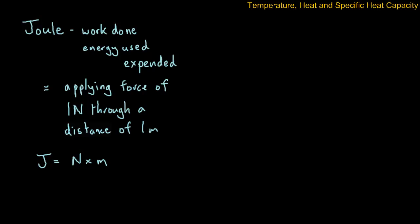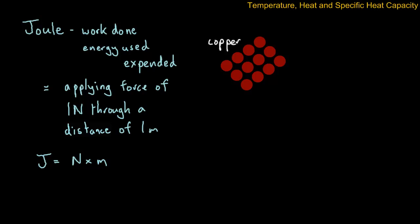Sometimes you'll see the formula written as: joules equals newtons multiplied by meters. Now, how does this relate to heat? Let's take a look at a piece of copper. Here we have copper, a metal, and the circles represent the copper atoms. Be careful — this is just a convention; atoms are not actually this shape. If you remember, temperature is measuring the kinetic energy, or the speed of the motion of the atoms.